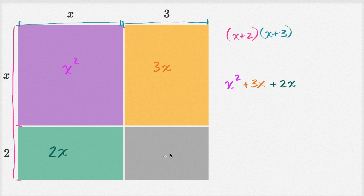And then finally, this little gray box here, its height is two, we see that right over there. Its height is two, and its width is three. We see it right over there. So it has an area of six, two times three. So plus six.